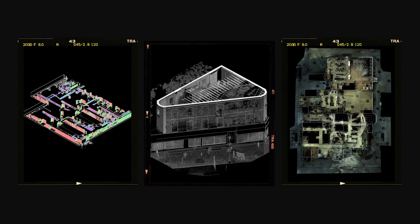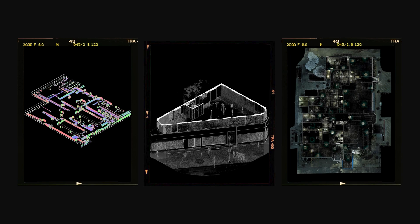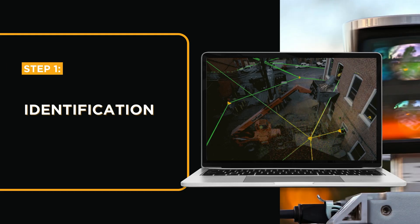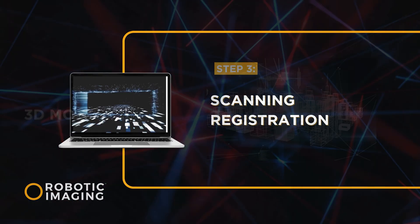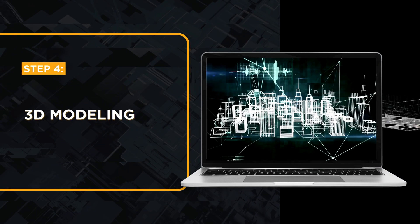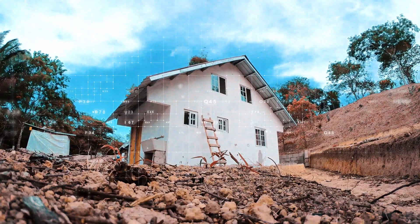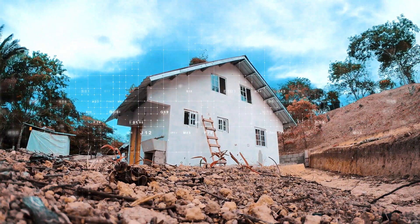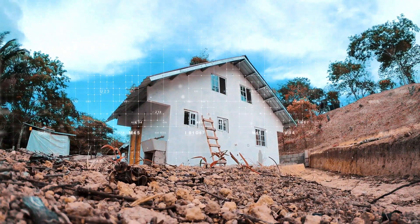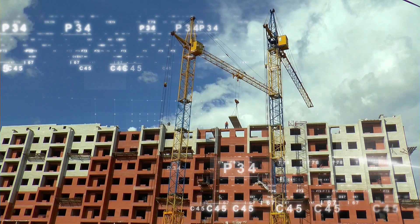The entire Scan2BIM process is divided into four stages: identification of information requirements, scan planning, scanning registration, and 3D modeling. During the identification stage, the specific information required for the project is determined, including the level of detail and accuracy needed.